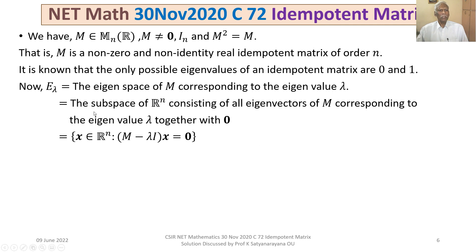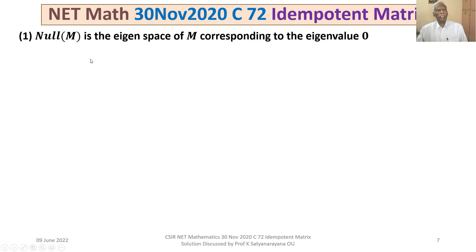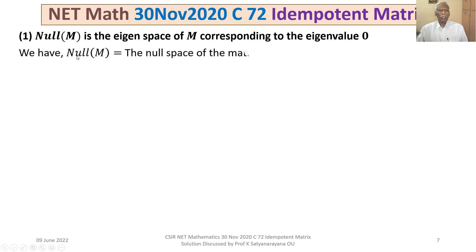We need to discuss E₀, the eigenspace of M corresponding to eigenvalue 0, and E₁, corresponding to eigenvalue 1. Let us now examine the validity of Option 1: the null space of M equals the eigenspace of M corresponding to eigenvalue 0, i.e., null(M) = E₀.